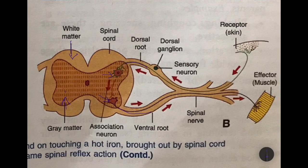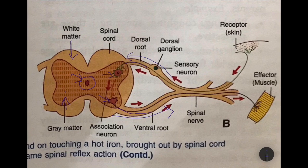The white matter, that is the axons, lies on the outside. The white matter which contains axons runs longitudinally to and from the brain, and even crosses from one side to the other. There is also a small central canal, which runs the entire length and is continuous with the cavities of the brain, also filled with cerebrospinal fluid.